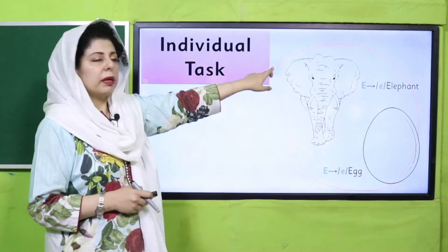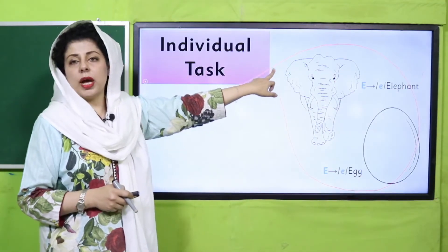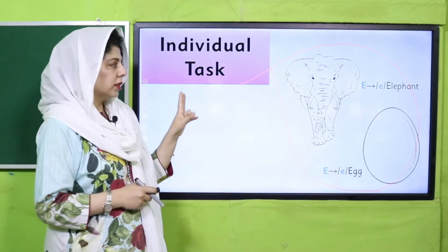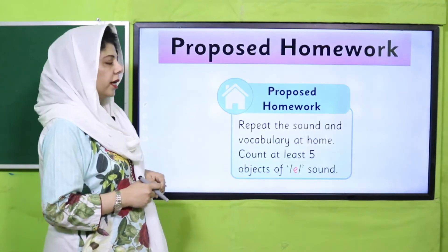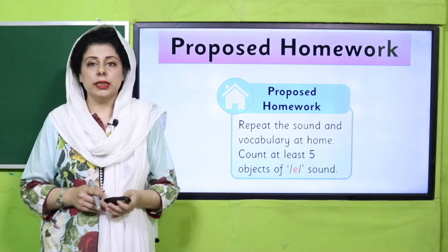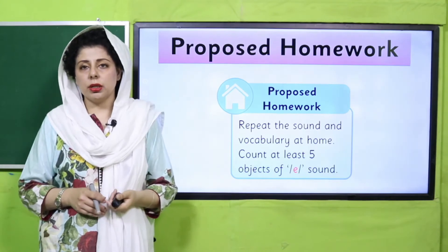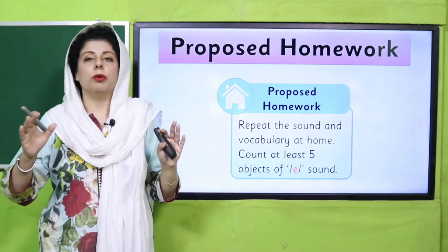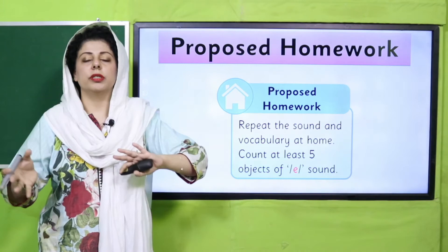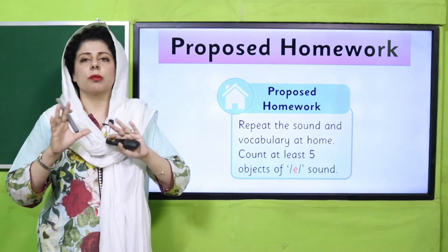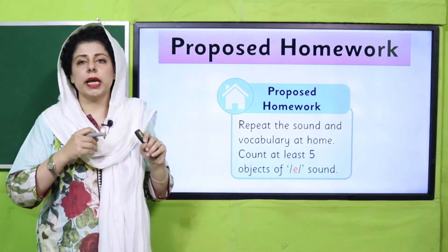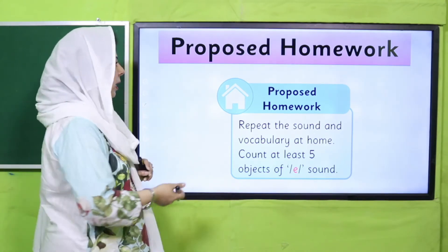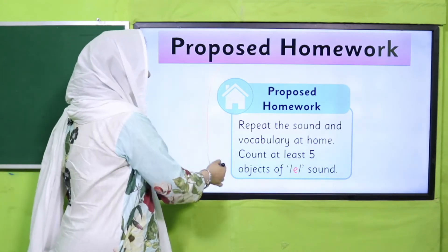Now dear children, you have two sight words of the 'eh' vocabulary and have done some coloring. So, quickly take your homework. When you do the art activity, teacher will have lots of colorful paints, crayons, or markers, and some egg shells ready. Now your homework is: you will go home, repeat this sound, and try to find objects with the 'eh' sound at home.